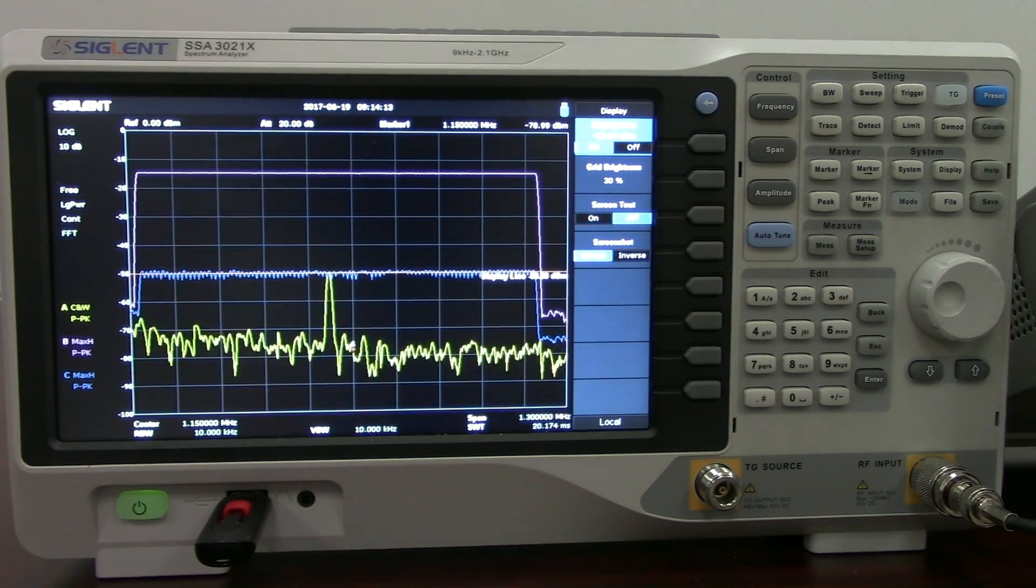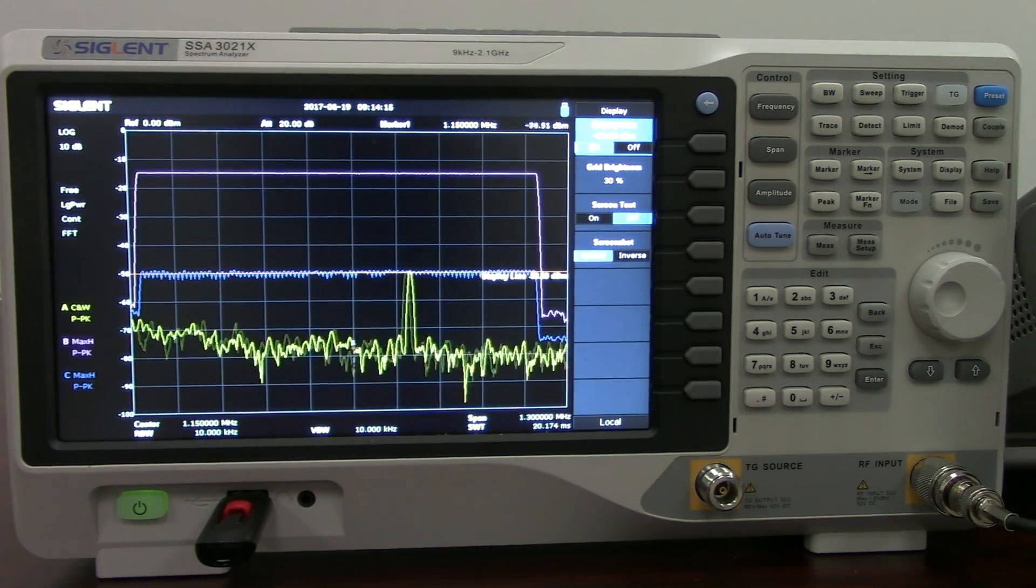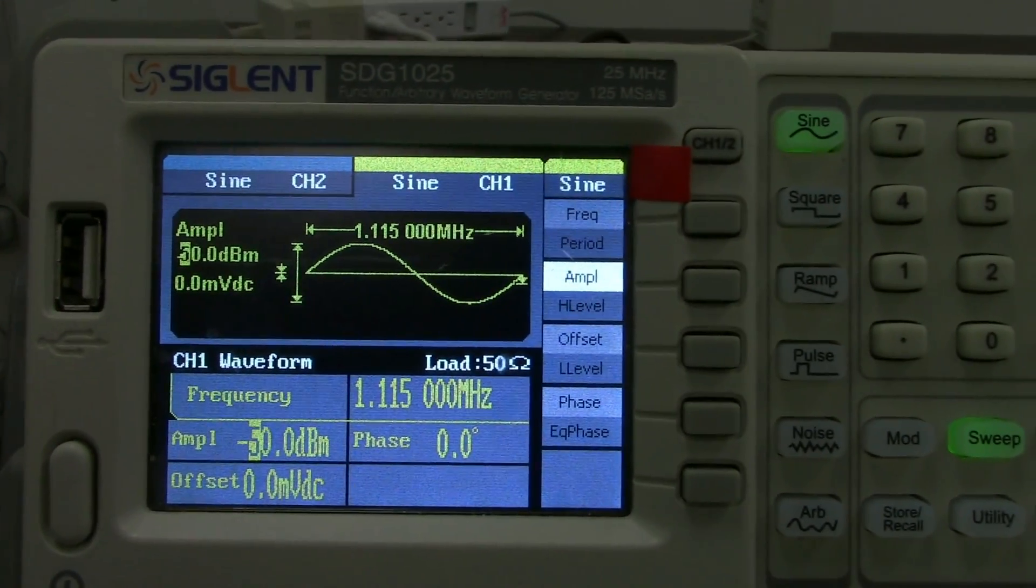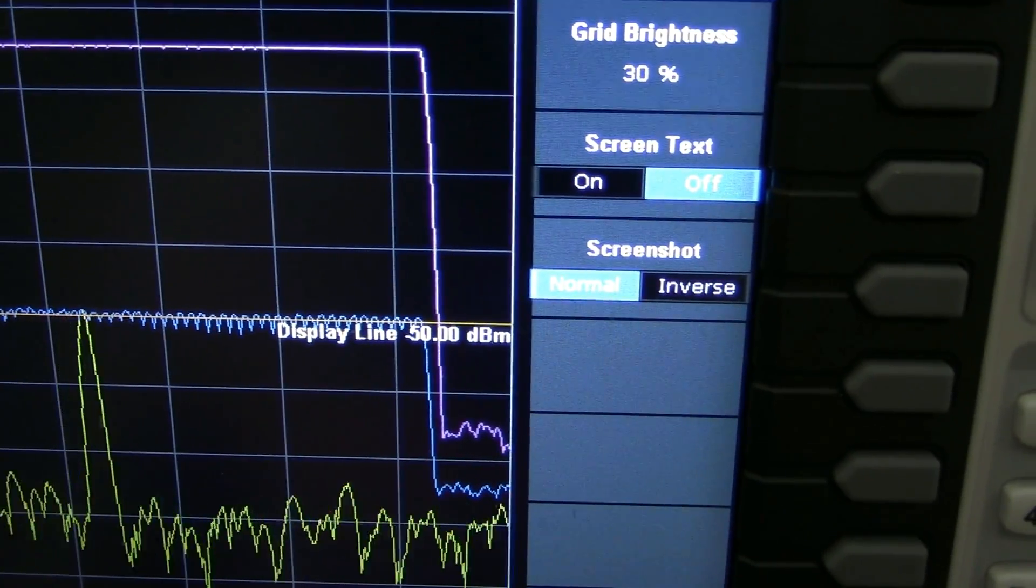Now let's set up a lower amplitude sweep. We're going to just set this up for minus 50 dBm and see how that looks. So here's the generator front panel. You can see minus 50 dBm here. And we're sweeping at a nice 50 dBm as well.